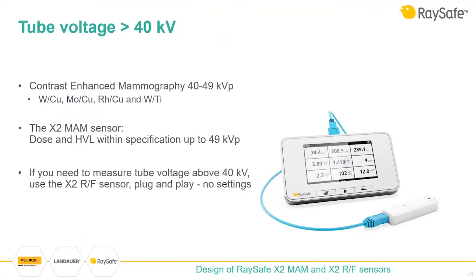One extra note about voltages above 40 kV: some machines have optional dual-energy or contrast-enhanced mammography functions. This involves two exposures — one with normal settings and a second with high kV above 40 kV and high filtration such as copper or titanium filter. This second exposure is either tungsten-copper, molybdenum-copper, rhodium-copper, or tungsten-titanium. For kVp measurements above 40 kV, use the X2 RF sensor instead of the MAM sensor — no settings required, just plug and play.